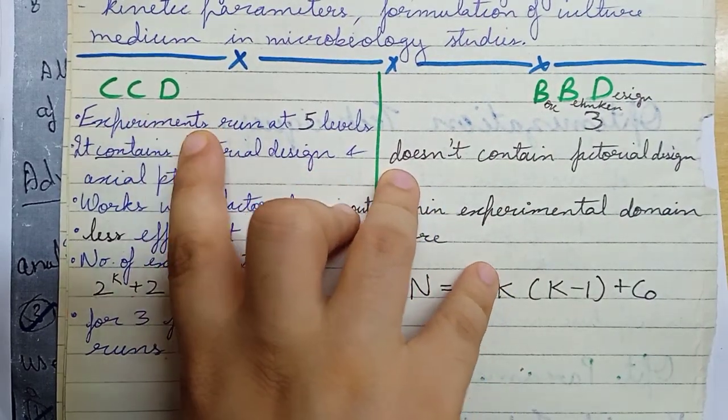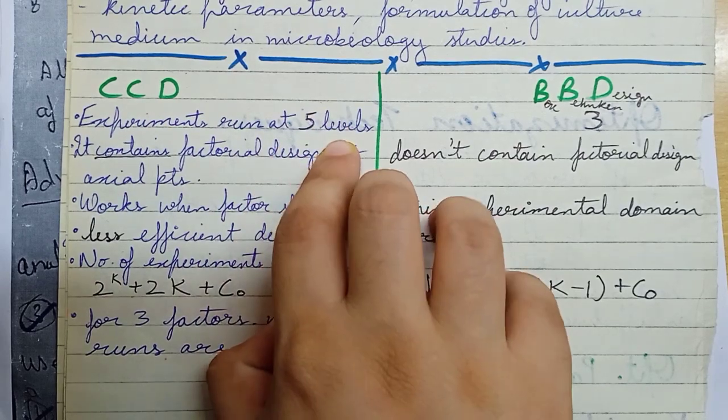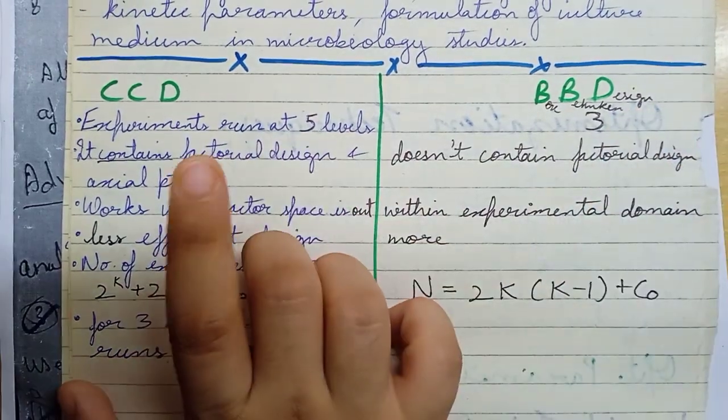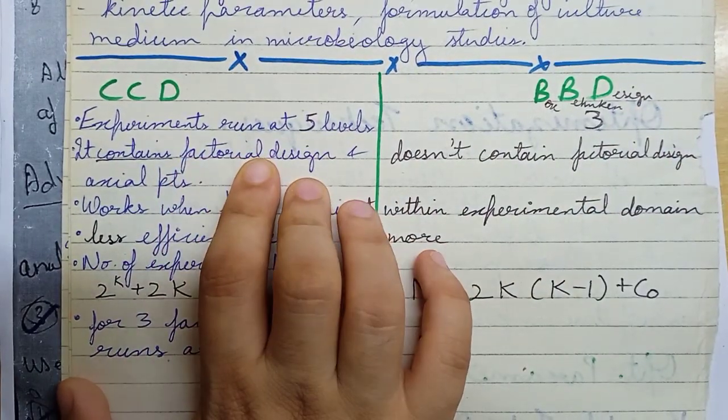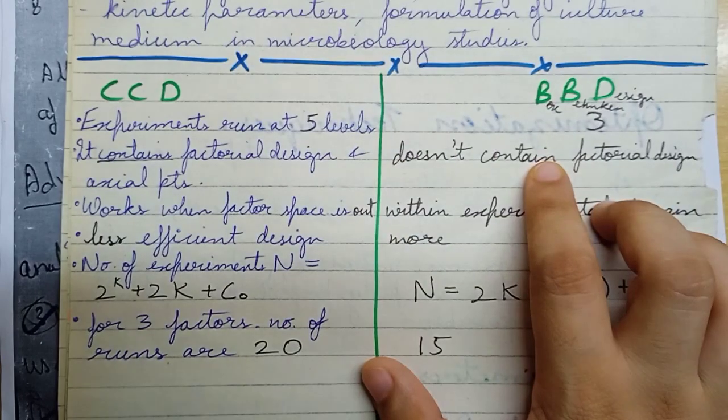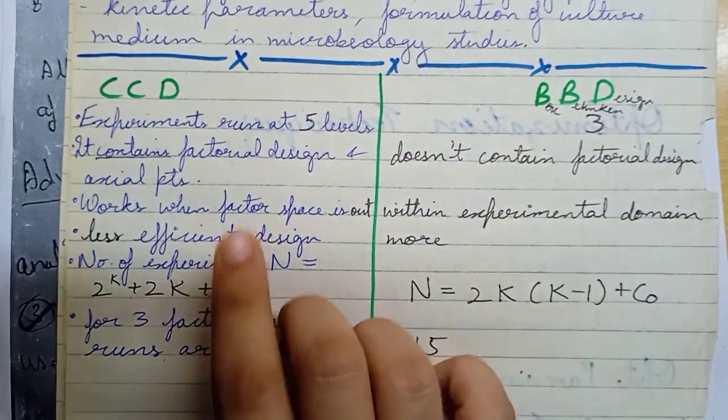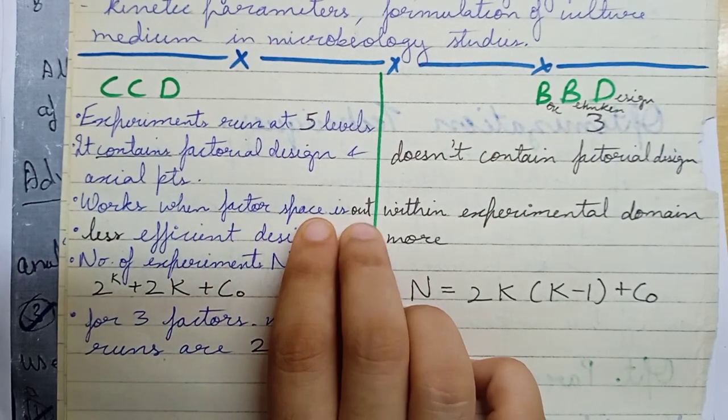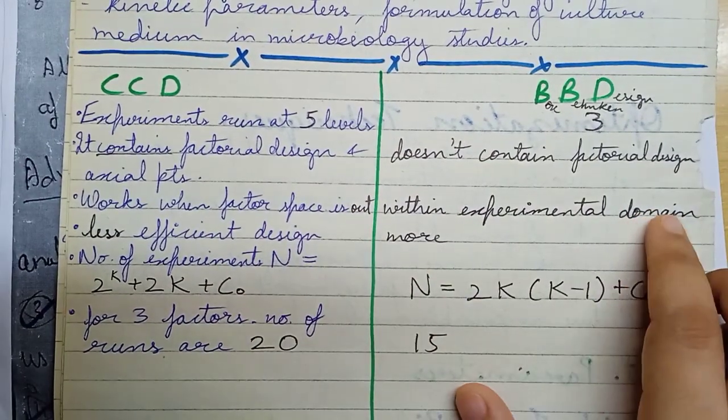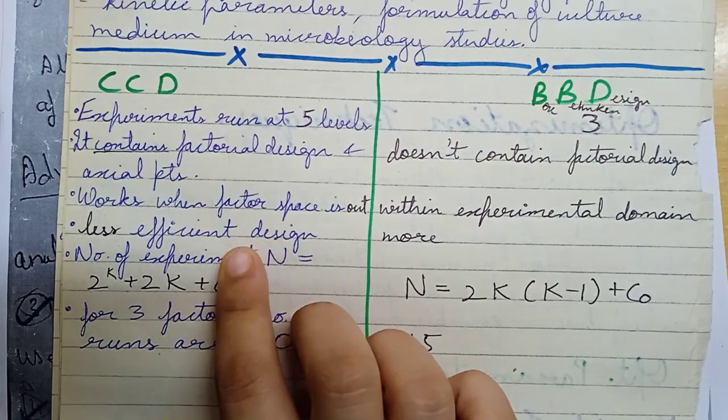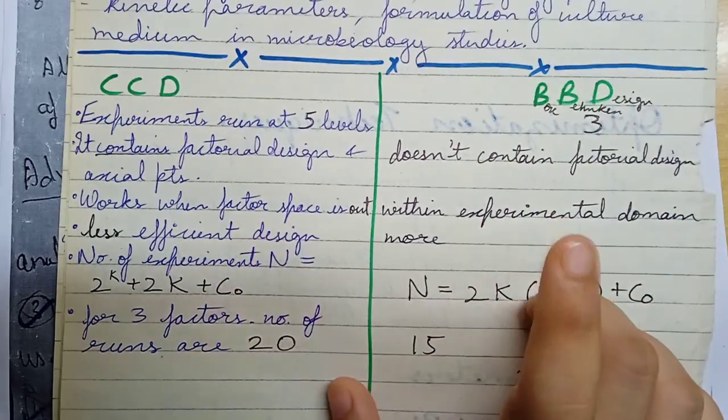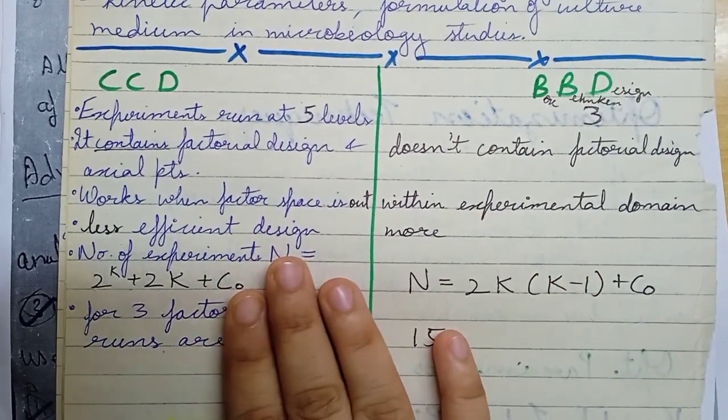CCD experiments run at five levels while BBD runs at three levels. CCD contains factorial design and axial points. BBD is not a factorial design. CCD works when factor space is outside experimental domain while BBD works within. CCD is less efficient while BBD is more efficient.